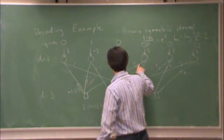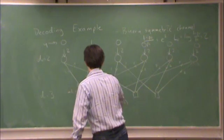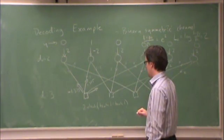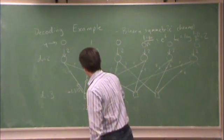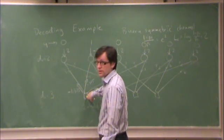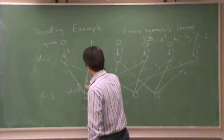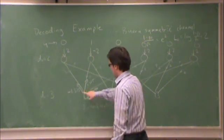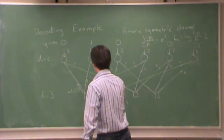Similarly, along here, this outgoing message is 2 times arc tanh of tanh(2/2), which is 1, times tanh(−2/2), which is −1. So that's the same magnitude as this one: minus 1.325.